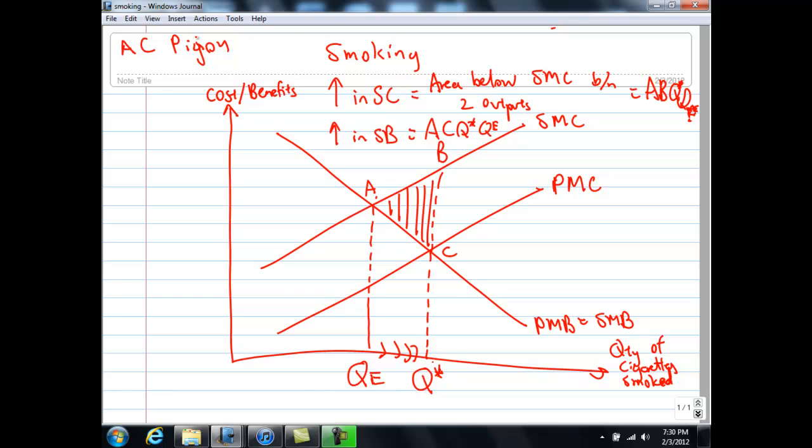In this case what you must know at QE, where is the so-called external marginal cost? You can see, at QE, the gap between the PMC and SMC curve is known as the external marginal cost. So this tells the government what sort of tax to set to allow the number of cigarettes smoked to fall from QSTAT to QE.